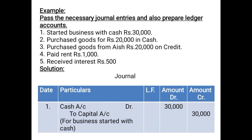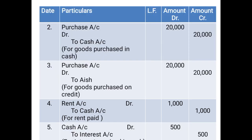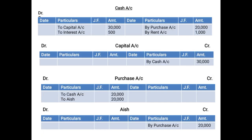Next: purchased goods from Ash rupees 20,000 on credit. Journal entry: purchase account debited 20,000 to Ash 20,000. Purchase account is already prepared, so we post within it. Since purchase account is debited, we post the credit aspect — Ash is credited — on the debit side of purchase account as 'To Ash 20,000'. While preparing Ash's account, since Ash is credited in the entry, we record the debit aspect — purchase account is debited — and post on the credit side of Ash as 'By Purchase Account 20,000'.